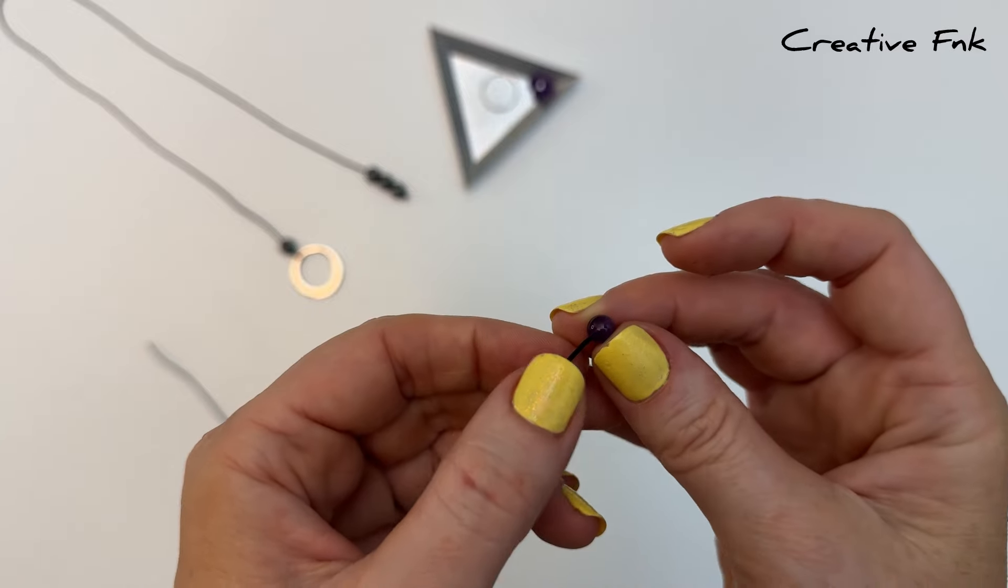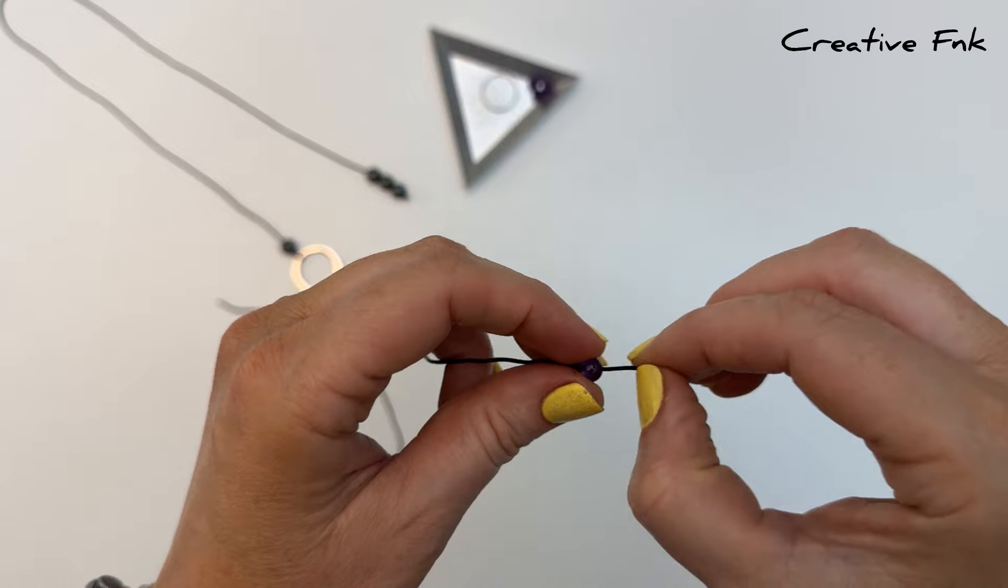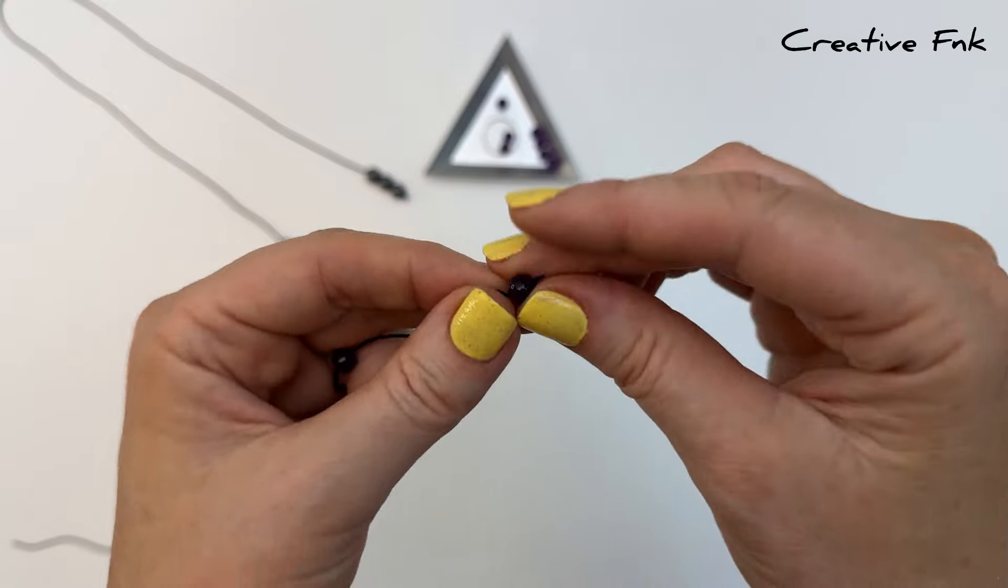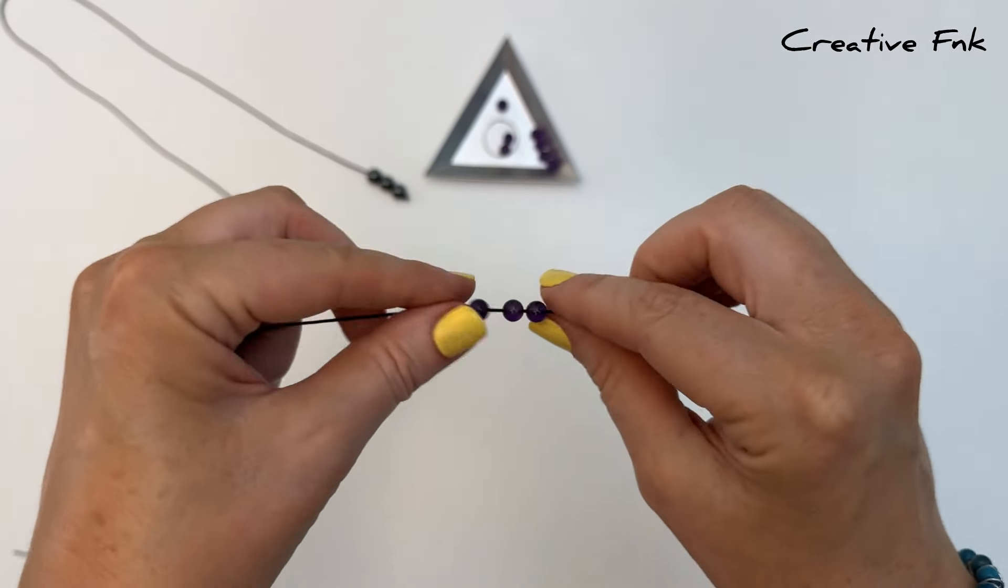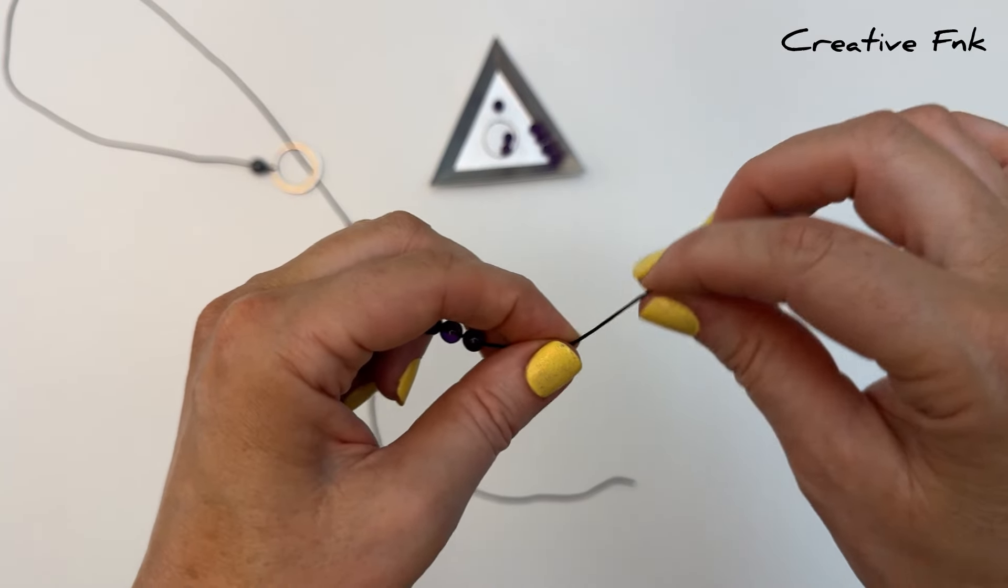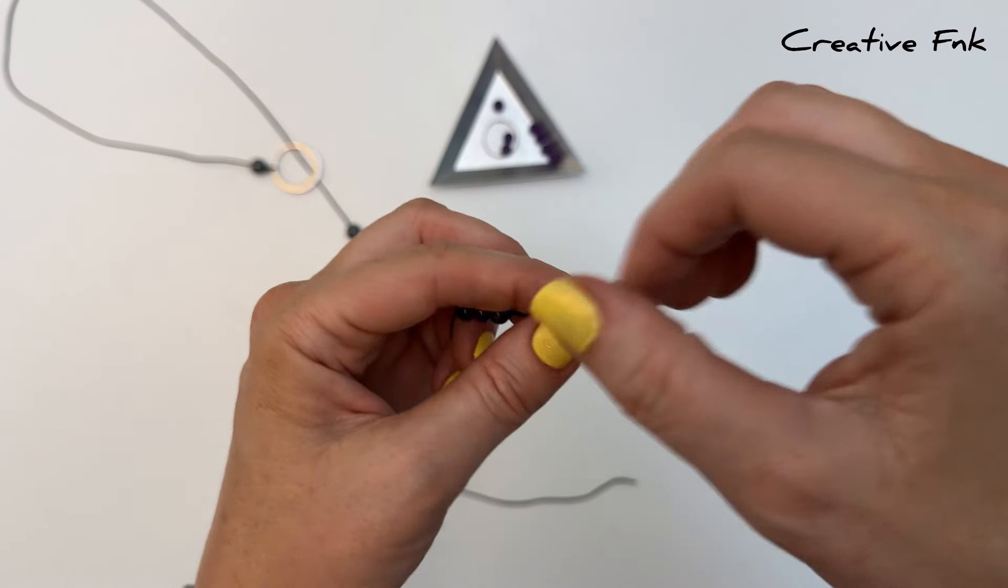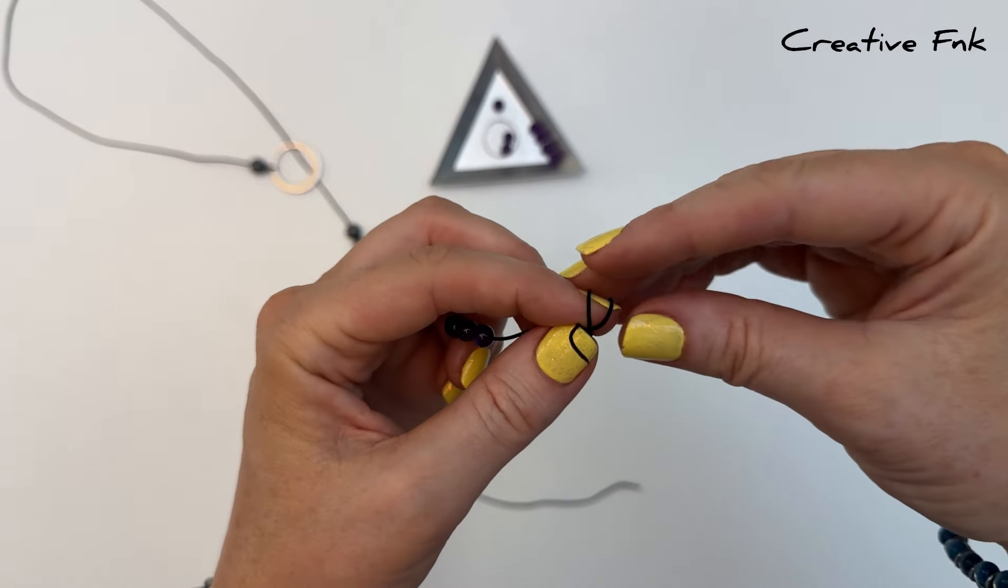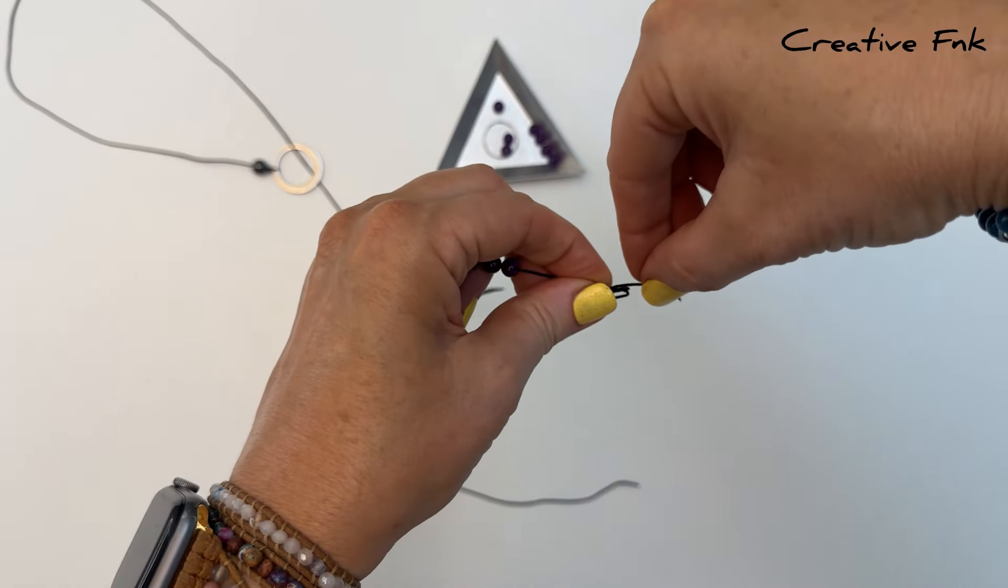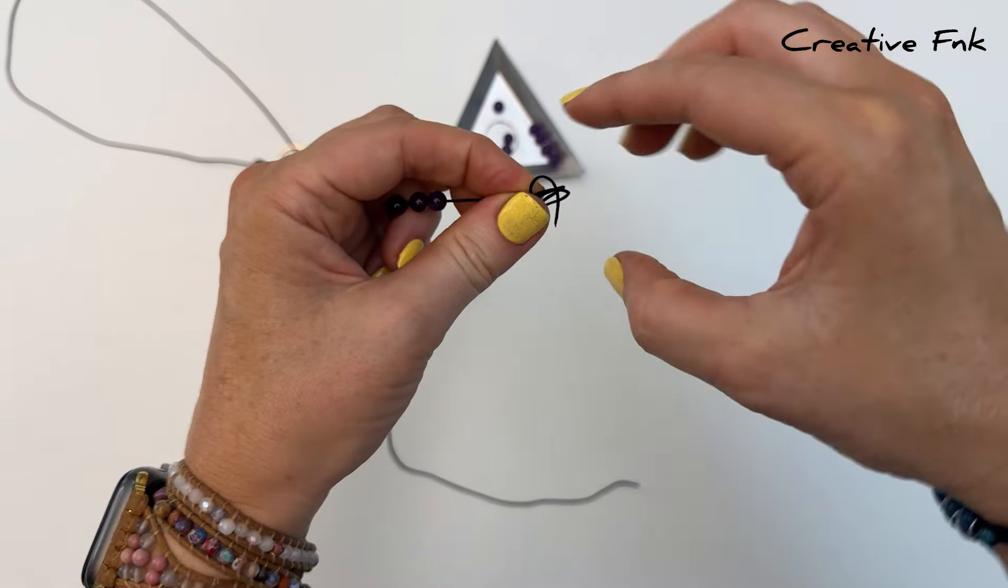Once our three beads are on, we hold our thread in our left hand with a little bit of length on the right hand side here, and then bring it down the back and around our finger towards the left for two full loops around. Now gently remove those two loops off your finger and bend the end of the cord around and place it down both loops, pulling it out the right hand side and gently pulling that knot down nice and tight and tidy.